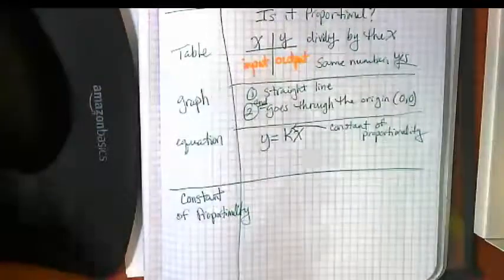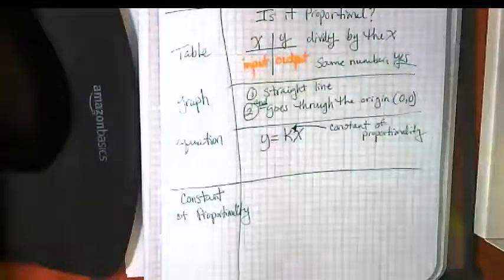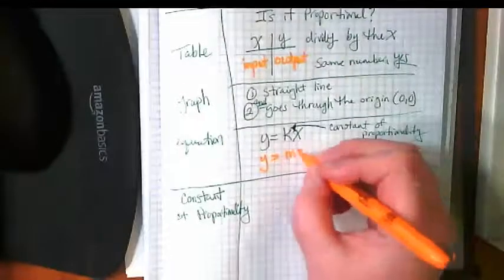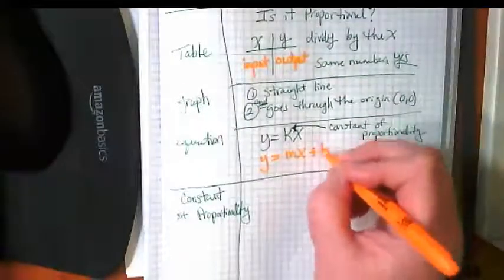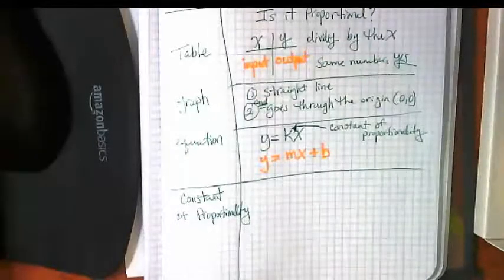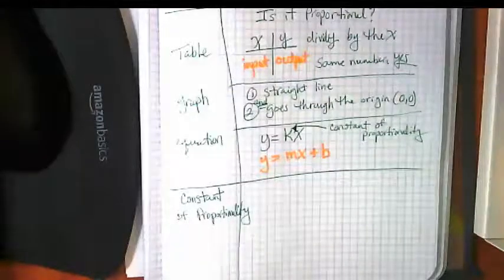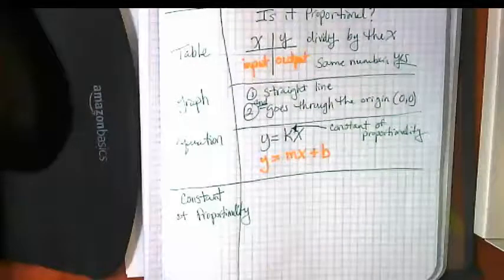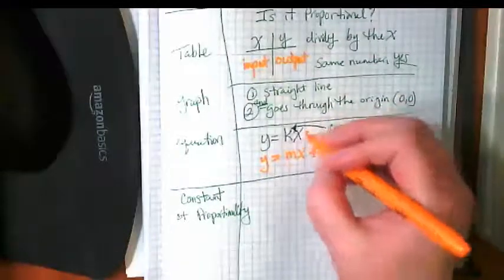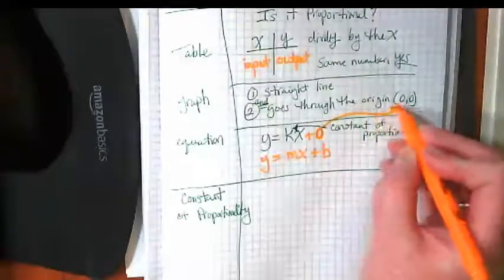There's an equation related to this that we worked with last year as well. I'm just going to add this to my notes for your information. It's Y equals MX plus B, if you remember seeing this equation before. In this case, the plus B is plus zero, because it's related to the origin.